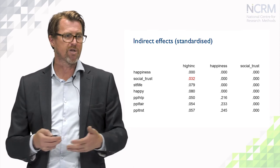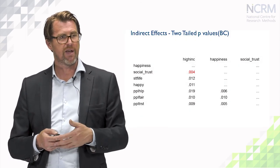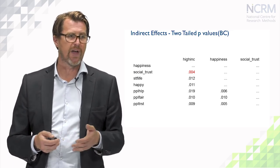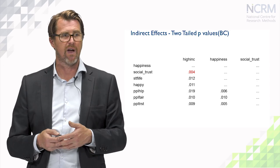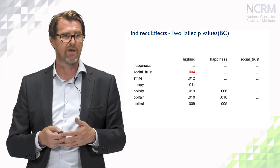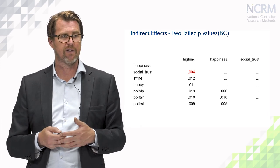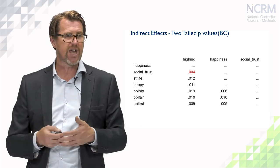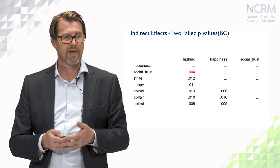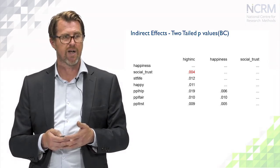Also in SEM software, you will get, as I said, the standard errors, either through bootstrapping or parametric estimation. And here we see that the two-tailed p-value for that indirect effect of income on social trust is significant at the 95% level of confidence. So we could reject the null hypothesis that there is no indirect path between income and social trust.